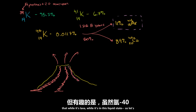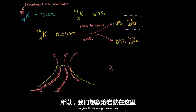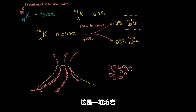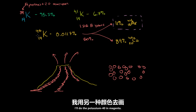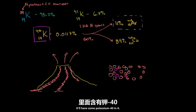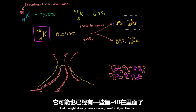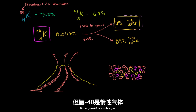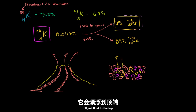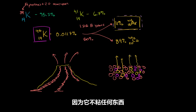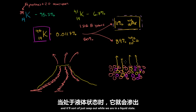But what's neat about argon-40 is that while the lava is in a liquid state, the argon-40 is not bonded to anything, so it'll just float to the top and bubble out — essentially evaporate out. And so it'll just seep out while the rock is in a liquid state.